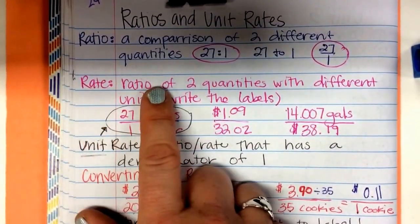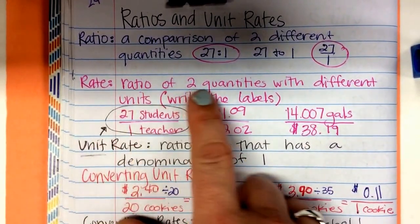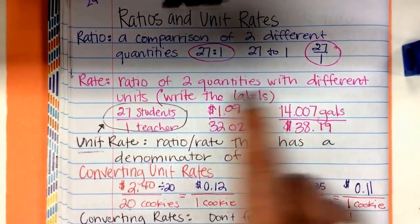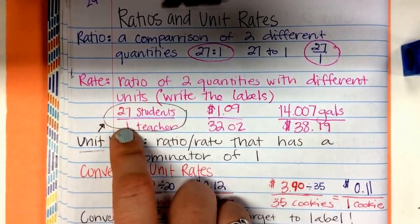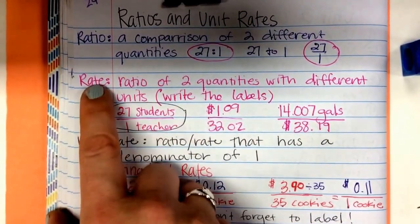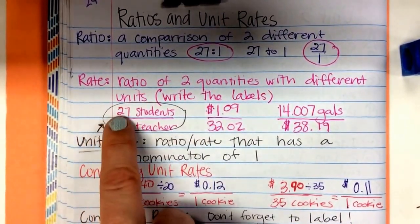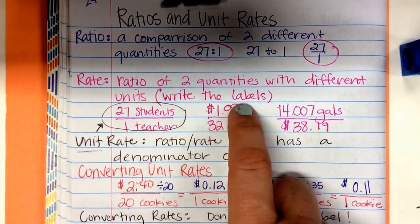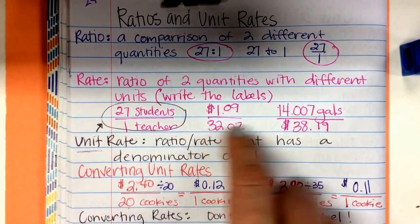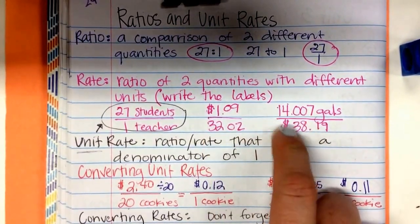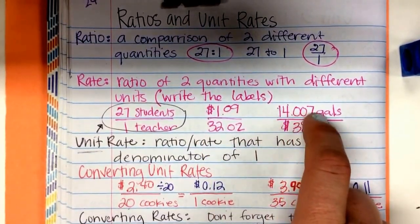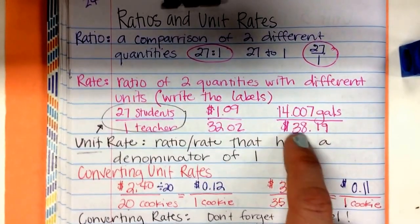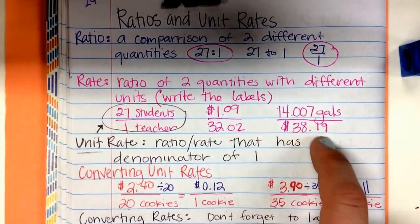Rate. A rate is a ratio of two quantities with different units. So here's where we write the labels. This is now a rate. 27 students-to-1 teacher. $1.09 for 32 ounces of soda. At the gas station, I bought 14.007 gallons, and it cost me $38.19.